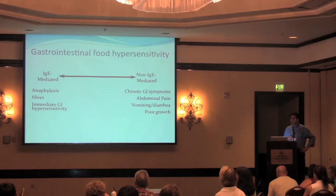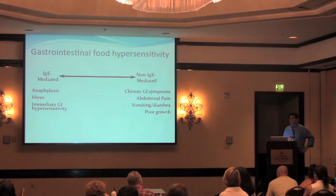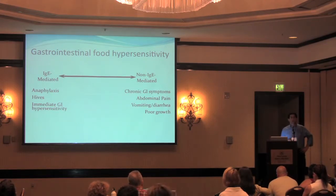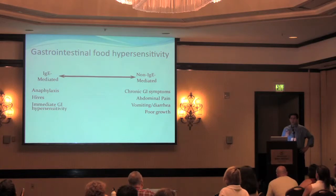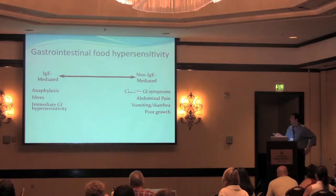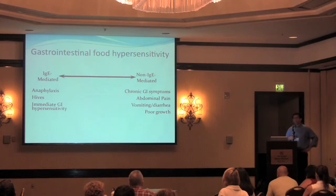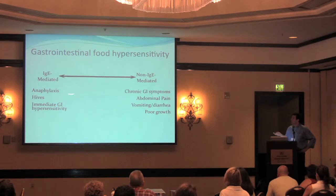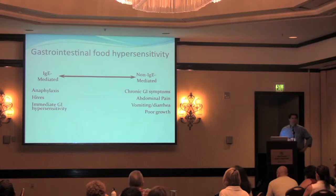Immunoglobulins come in a couple of flavors. One of those flavors is IgE. IgE-mediated allergies are the immediate ones — that's the child or the person who eats the peanut and immediately has trouble breathing, gets a rash all over their body. They can also come as non-IgE-mediated, and you can't test for these. When you do a blood test or a skin test, what you're testing for is IgE-mediated reactions — that's the immediate systemic reaction, the rash, someone who eats a peanut or milk and immediately starts throwing up.